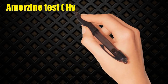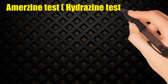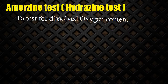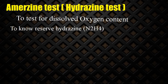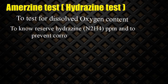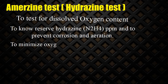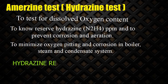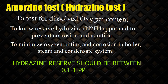Hydrazine test: This test is to test for dissolved oxygen content, to know the reserve hydrazine (N2H4) in ppm, and to prevent corrosion and aeration, minimizing oxygen pitting and corrosion in the boiler steam and condensate system. Hydrazine reserve should be maintained between 0.1 to 1 ppm.